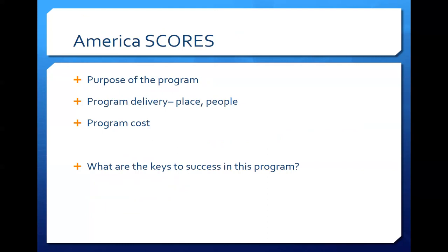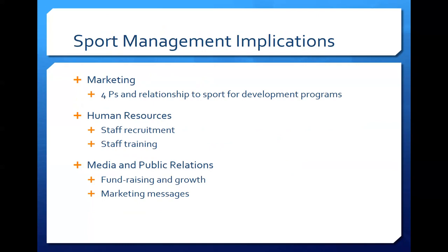The next step is looking at what the purpose of the program is and having it very explicitly stated — like a goal statement: the goal of this program is A, B, C. Then we look at the delivery: who's going to do it, where, and how? We've got to answer all those questions and come up with a budget. We could have the greatest program, but if it doesn't work monetarily, we need to go back to the drawing board. And finally, we look at how do we know we were successful with that activity?